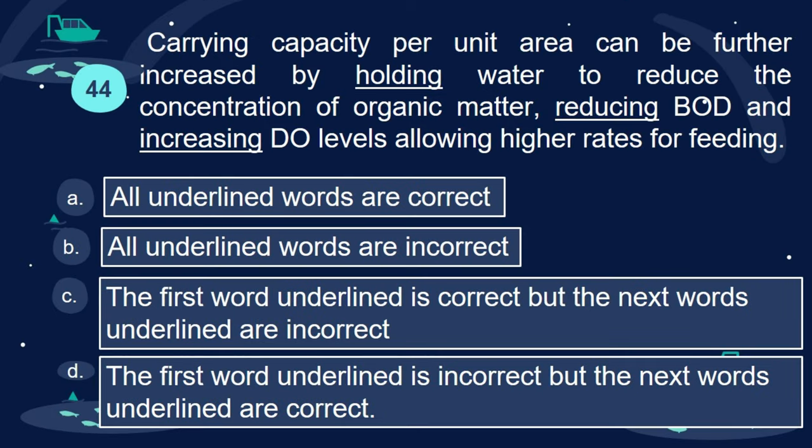Question 44. Carrying capacity per unit area can be further increased by holding water to reduce the concentration of organic matter, reducing BOD, and increasing DO levels allowing higher rates for feeding. A. All underlined words are correct. B. All underlined words are incorrect. C. The first word underlined is correct but the next words underlined are incorrect. D. The first word underlined is incorrect but the next words underlined are correct.